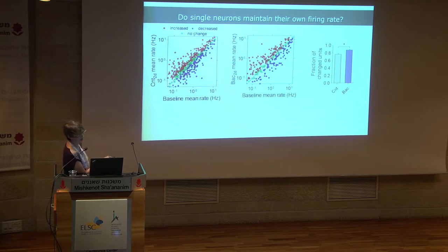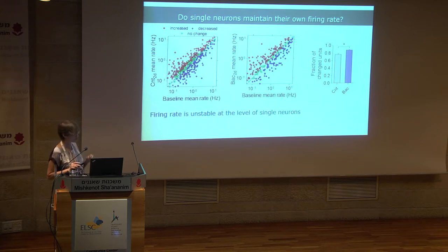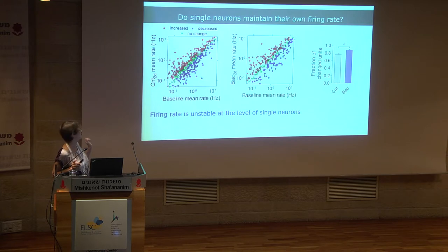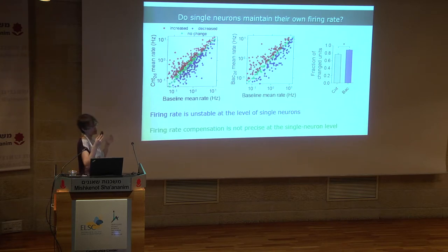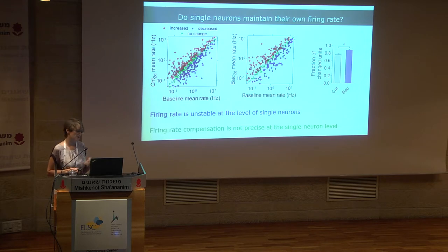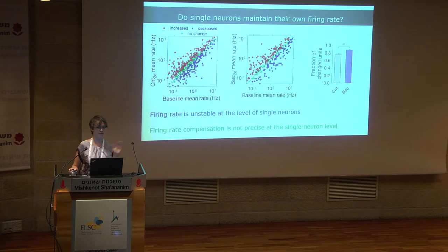Based on this electrophysiological data, we conclude that firing rate is unstable at the level of single neurons, and the firing rate compensation is not really precise — it comes back roughly but not exactly to the same level. We were a little nervous because this did not match assumptions in the literature, and we decided we needed another proof.